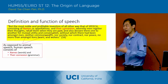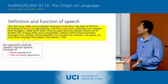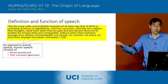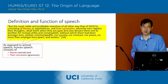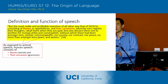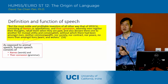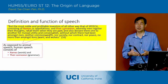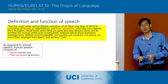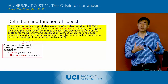He starts out with a very basic notion about the definition and function of speech. This is a quote from his text: 'The most noble and profitable invention of all others was speech, consisting of names or appellations, and their connection.' That's his key definition. Human speech consists of two things: names, which are words, and their connection — the connections between words, the grammar. That's for him the most basic definition. If we have both of those things, we know we have human language; if we don't, something is missing.